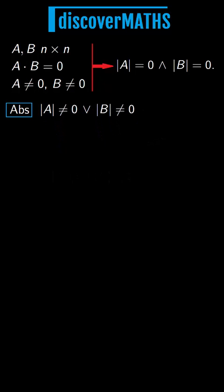So we have that the determinant of A is different from zero or the determinant of B is different from zero. There are these two cases and we need to show that in both we arrive at a contradiction.